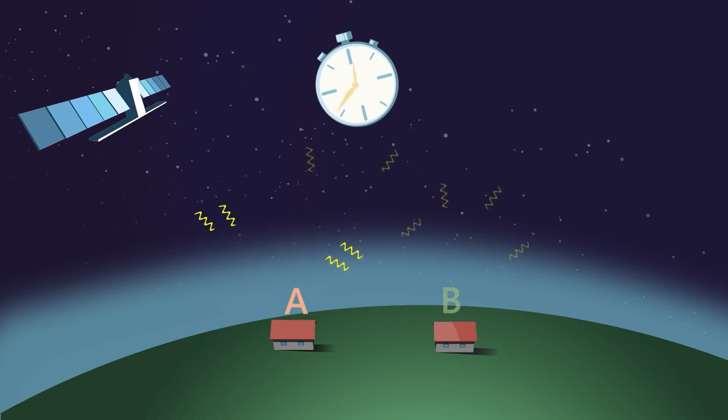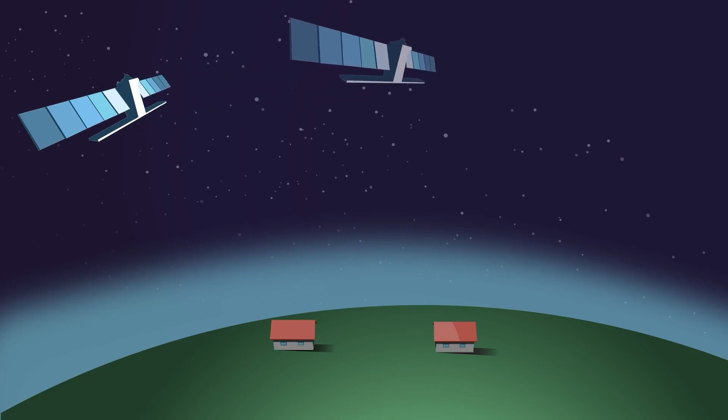To always be able to assign a signal to a specific point on the Earth's surface, the radar sensor is not oriented vertically downward like most optical sensors, but rather at an inclined angle to the side.